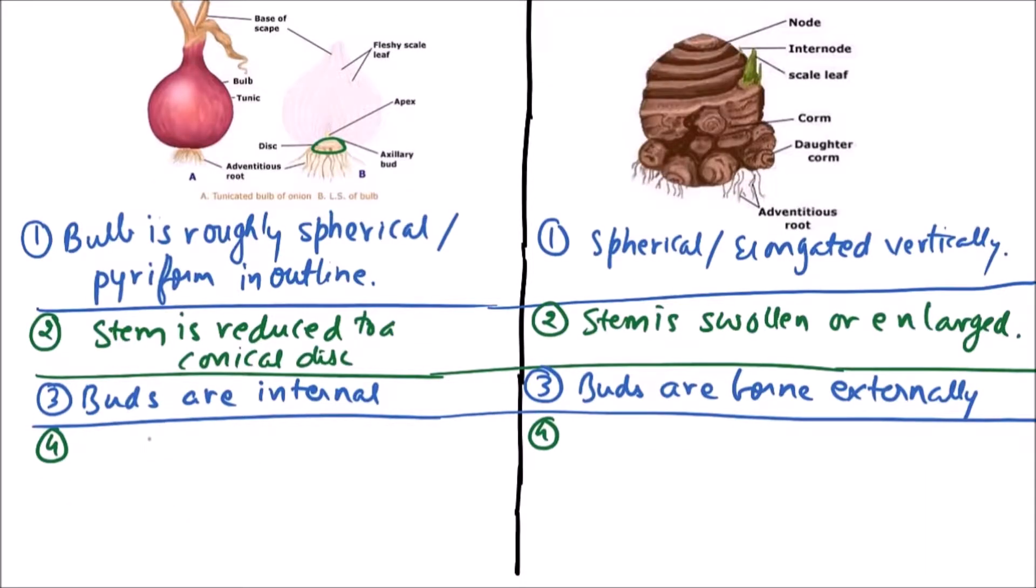In bulb, food is stored in leaf bases, or scaly leaves or scales, even in buds. While in case of corm, food is stored in stem.